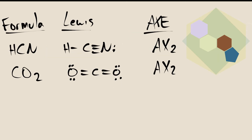The Lewis structures for HCN and CO2 are shown here. Both have central atoms with two electron groups attached. In both cases, the central atom is bonded to two atoms with no lone pairs of electrons on the central atom. From their Lewis structures, an AXE designation can be assigned. In both cases, the central atom is bonded to two electron groups, and those electron groups are atoms, or X's. According to VSEPR theory, molecules adopt a three-dimensional geometry which minimizes electron repulsion. In AX2 molecules, a linear geometry places the bonded electrons as far apart as possible.